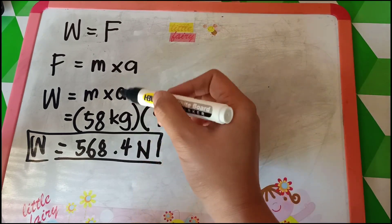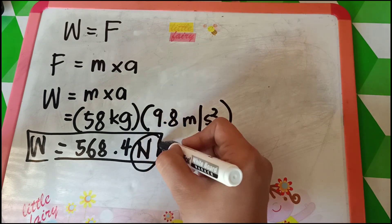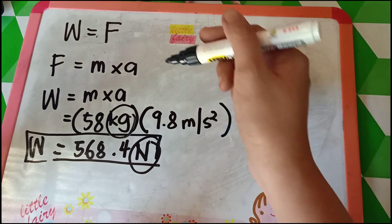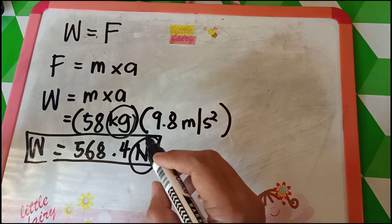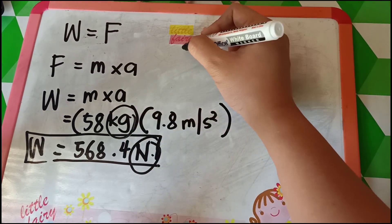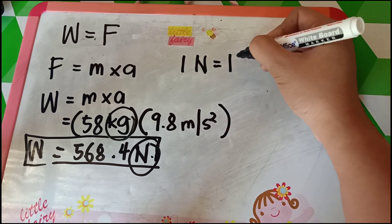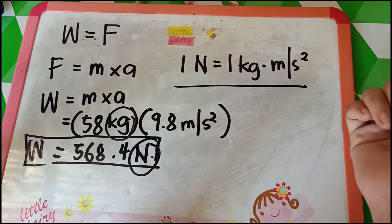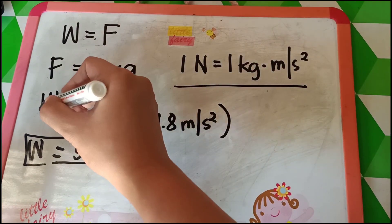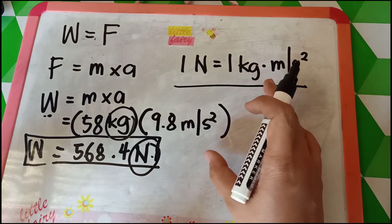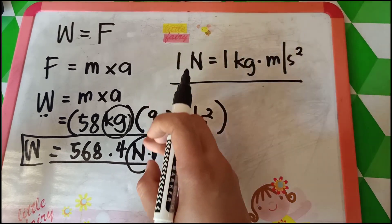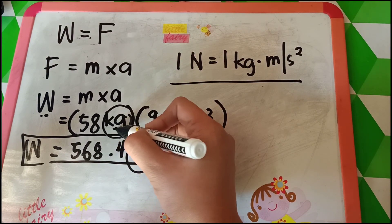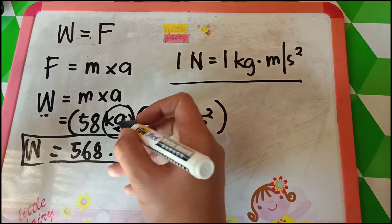Remember, weight is different from your mass. If you will be asked what is your weight, it should be expressed in newtons. If you will be asked what is your mass, it should be expressed in kilograms. The unit for mass is kilogram and the unit for force or weight is newton. By the way, 1 newton is also equal to 1 kilogram meter per second squared. Your weight varies depending on the acceleration due to gravity of a certain planet. Your mass remains the same, but your weight changes.